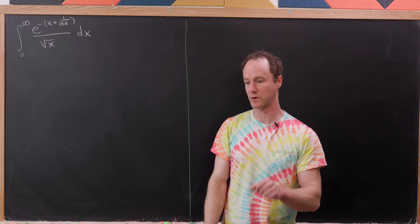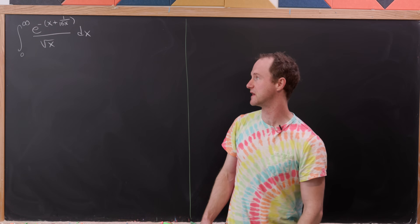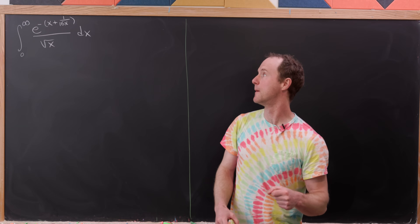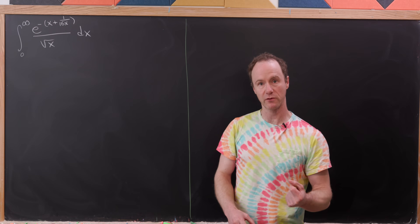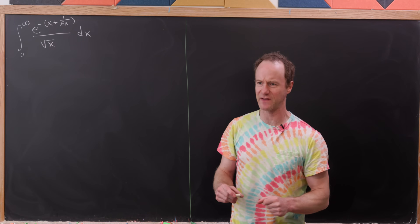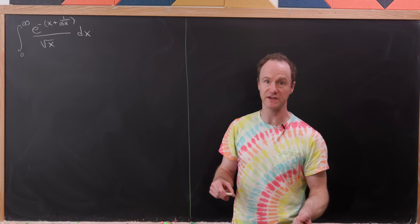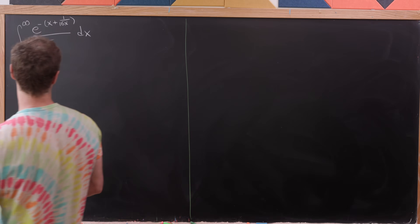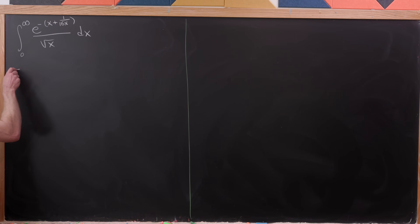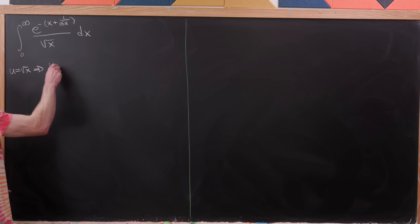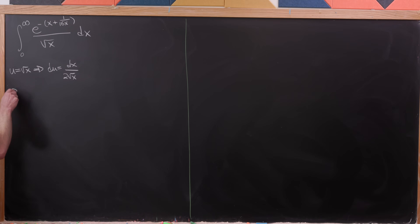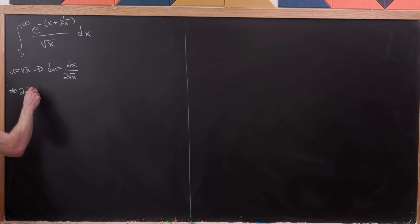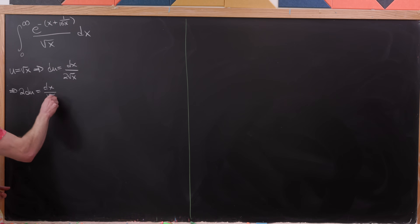Today we've got a nice integral suggested by a viewer. We're going to evaluate the integral from 0 to infinity of e to the power of minus x plus 1 over 16x, all over the square root of x. That square root of x in the denominator, along with the fact that the derivative of the square root of x puts a square root of x in the denominator, motivates our first substitution: let u equal the square root of x. That means du equals dx over 2 times the square root of x, or equivalently, 2 du equals dx over the square root of x.